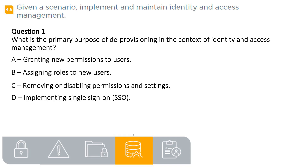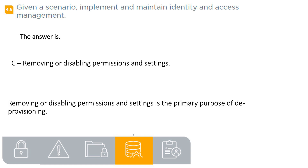Question 1. What is the primary purpose of deprovisioning in the context of identity and access management? A. Granting new permissions to users. B. Assigning roles to new users. C. Removing or disabling permissions and settings. D. Implementing single sign-on (SSO). The answer is C: removing or disabling permissions and settings. Removing or disabling permissions and settings is the primary purpose of deprovisioning.